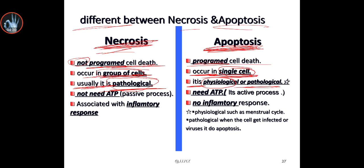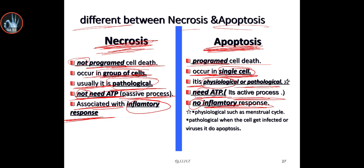Necrosis is associated with an inflammatory response. But apoptosis does not produce an inflammatory response. Also, necrosis requires no ATP — it is a passive process, no energy is needed. But apoptosis requires ATP and energy, making it an active process.